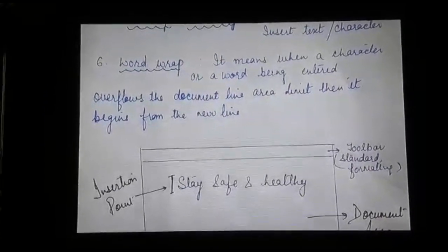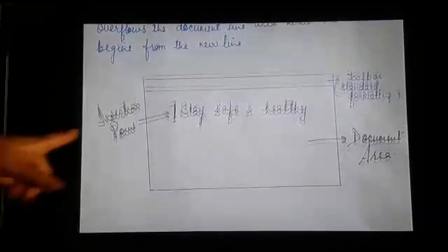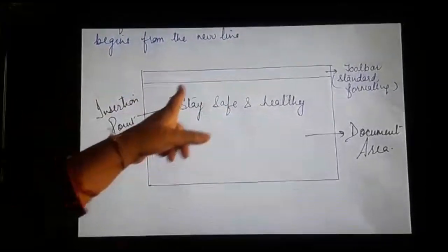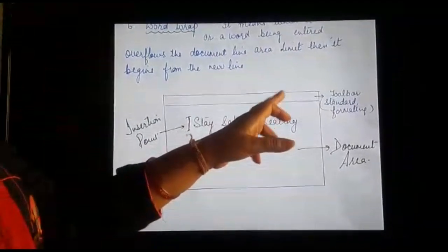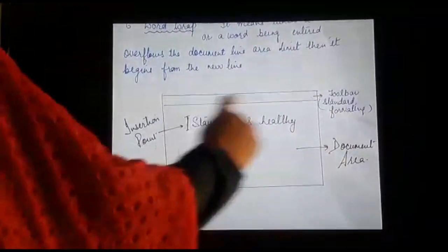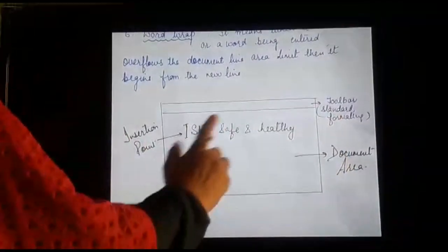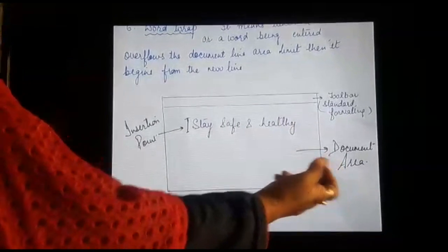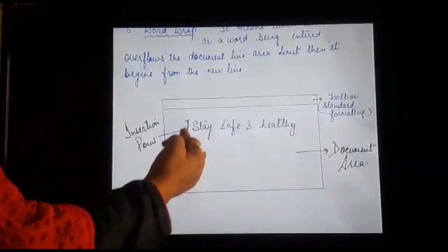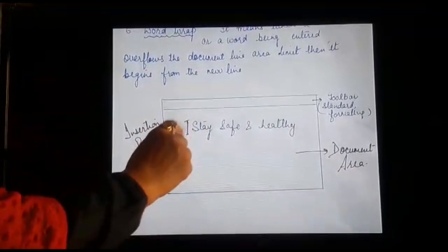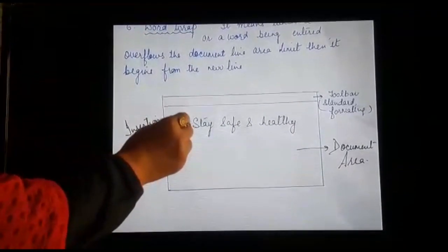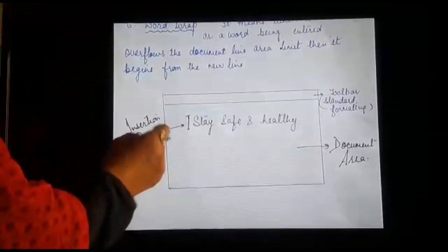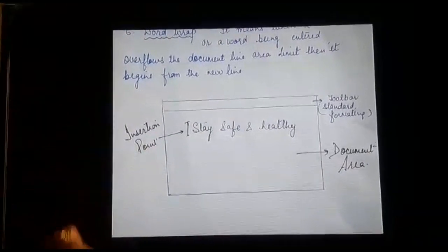Now I will be explaining the figure. Here you can see the spaces for the different toolbars — standard toolbars and formatting toolbars. The white area is known as the document area. You can see the vertical blinking line here — this is where we start typing the text, and this is known as the insertion point. That's all for today. Thank you.